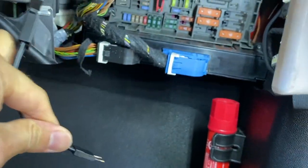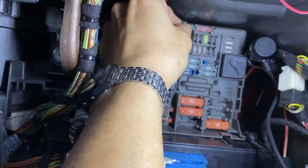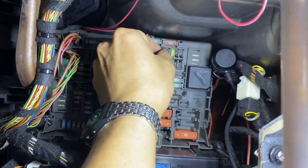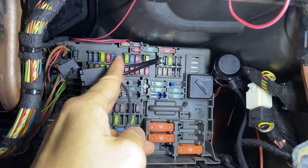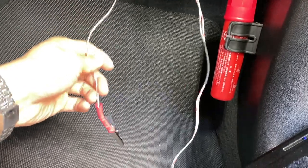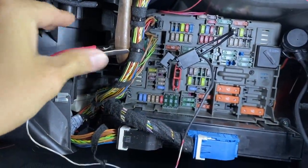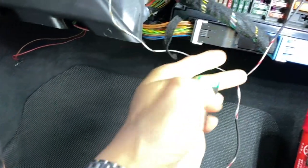So, we put this pin into like this one, fuse number 21, and connect the ground to the car. And we see the LED light up.